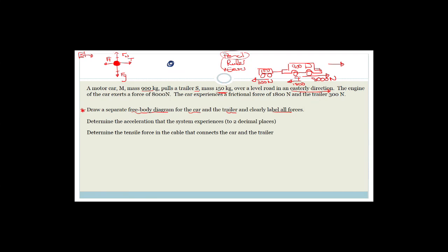Now for the car, we draw another free body diagram dot. We have force of gravity down and F normal up, perpendicular to the ground. Then there's the applied force — the engine force — pulling the car forward. There's also tension in the rope acting backward, because the car is feeling the trailer pulling back. Plus there's a force of friction, also opposite to the direction of motion.